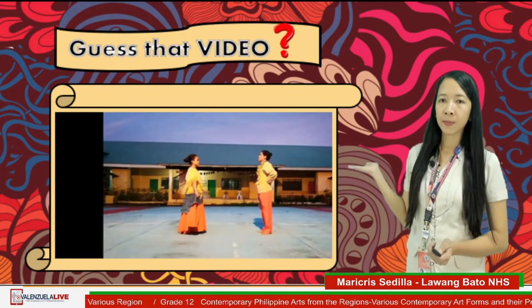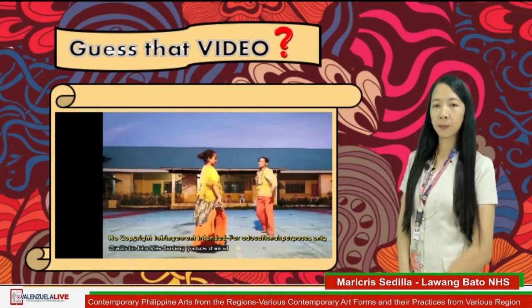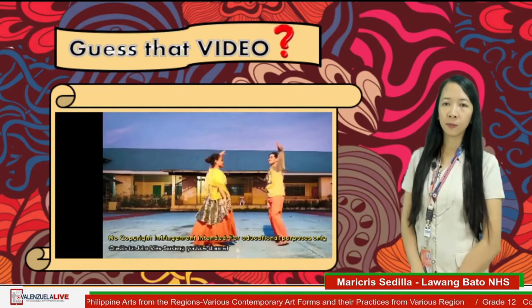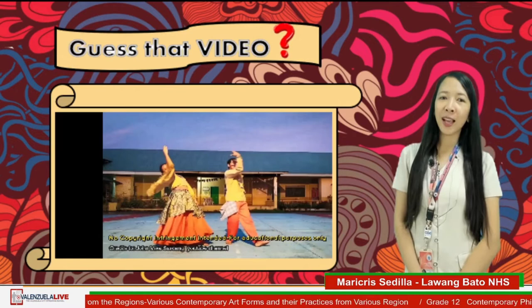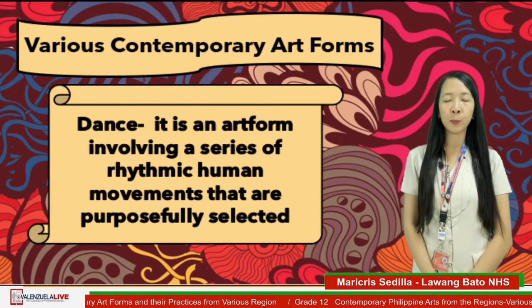Let us have an example with the first slide. The answer is dance. When we say dance, it is referred to as the art form involving a series of rhythmic human movements that are purposely selected.